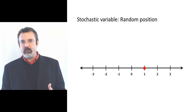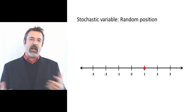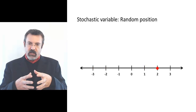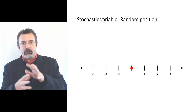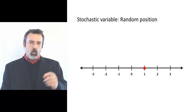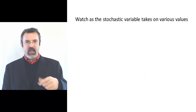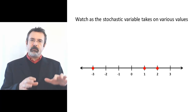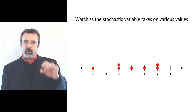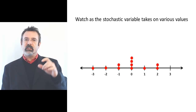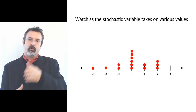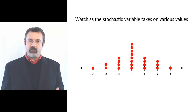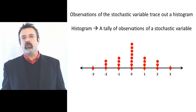A stochastic variable is random. It moves around the number line — sometimes it's at one end, sometimes it's at the other. Sometimes it moves large distances, sometimes small distances. Watch what happens as this stochastic variable starts to take on different values. Each time it appears somewhere on the number line, we put a dot, and these dots accumulate as the stochastic variable moves around. As these dots start to accumulate, they build a pattern. This pattern we call a histogram.